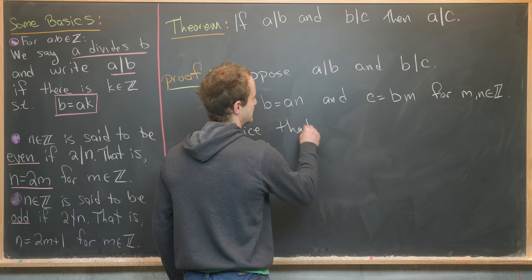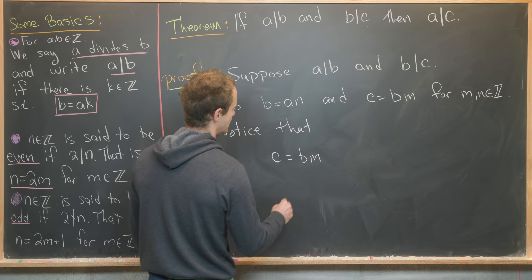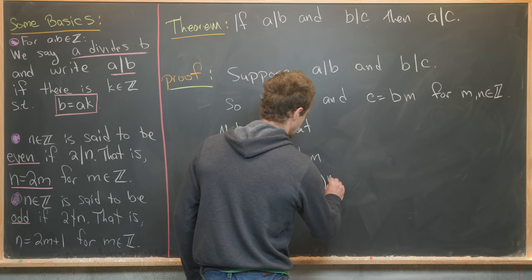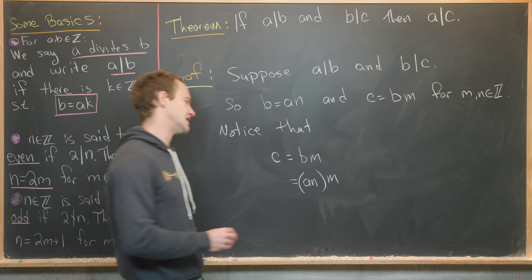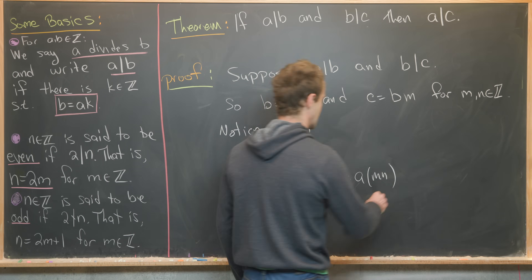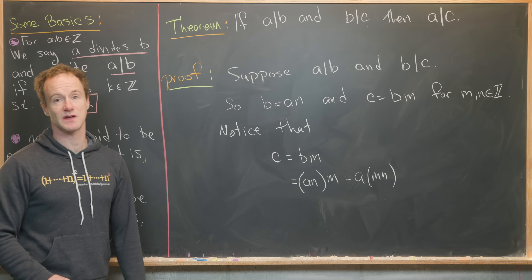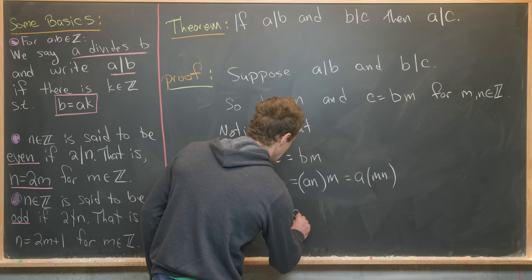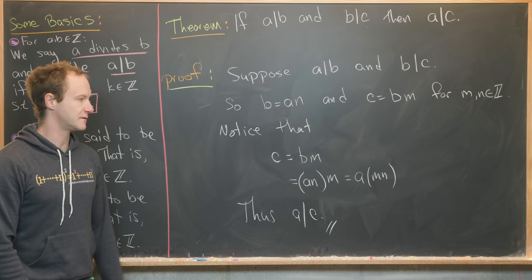By the associativity of multiplication, that equals a times mn. So we've got c equals a times some other number, which is exactly what we need to say that a divides c. That finishes this proof.